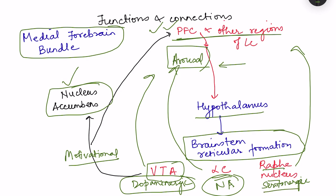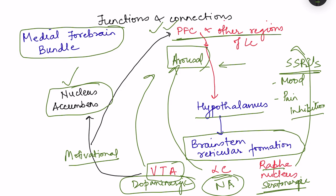Serotonergic neurons project to various areas and are responsible for mood elevation — which is why SSRIs, which inhibit serotonin reuptake, are used in depression. Serotonin is also responsible for pain inhibition. Our emotional state governs the amount of pain we perceive; for example, soldiers who are badly injured during battle may not feel pain until afterward, because emotional state modulates pain perception.